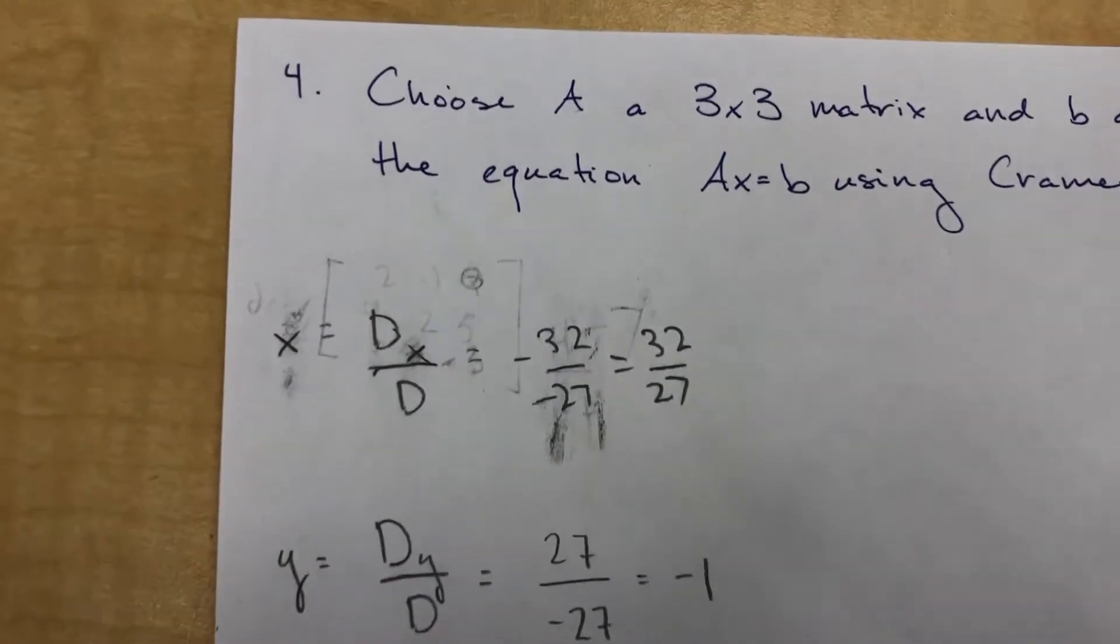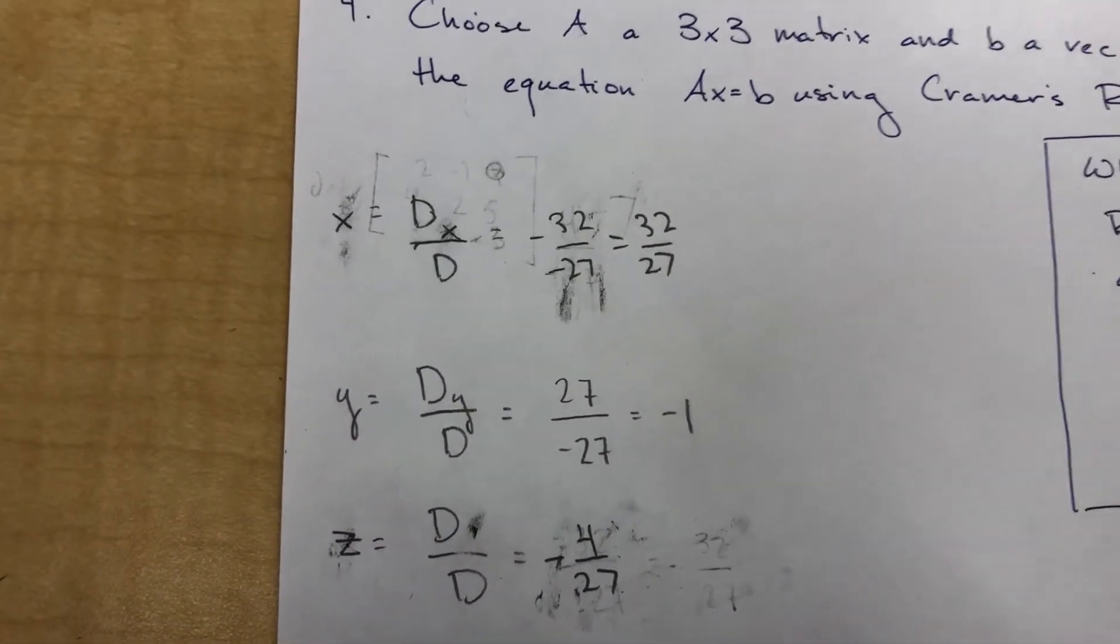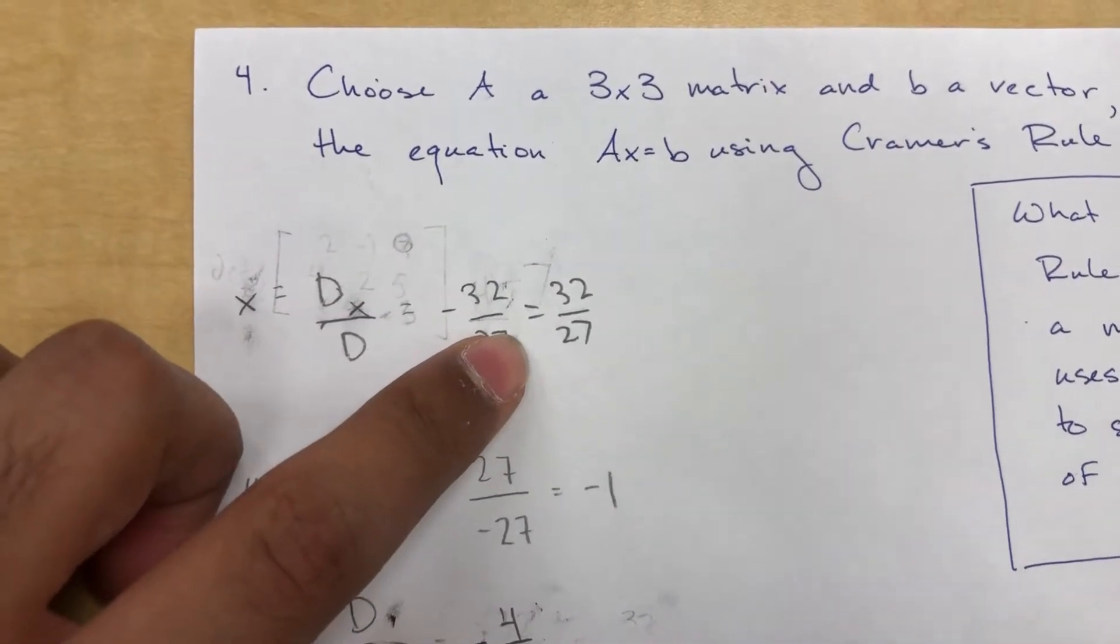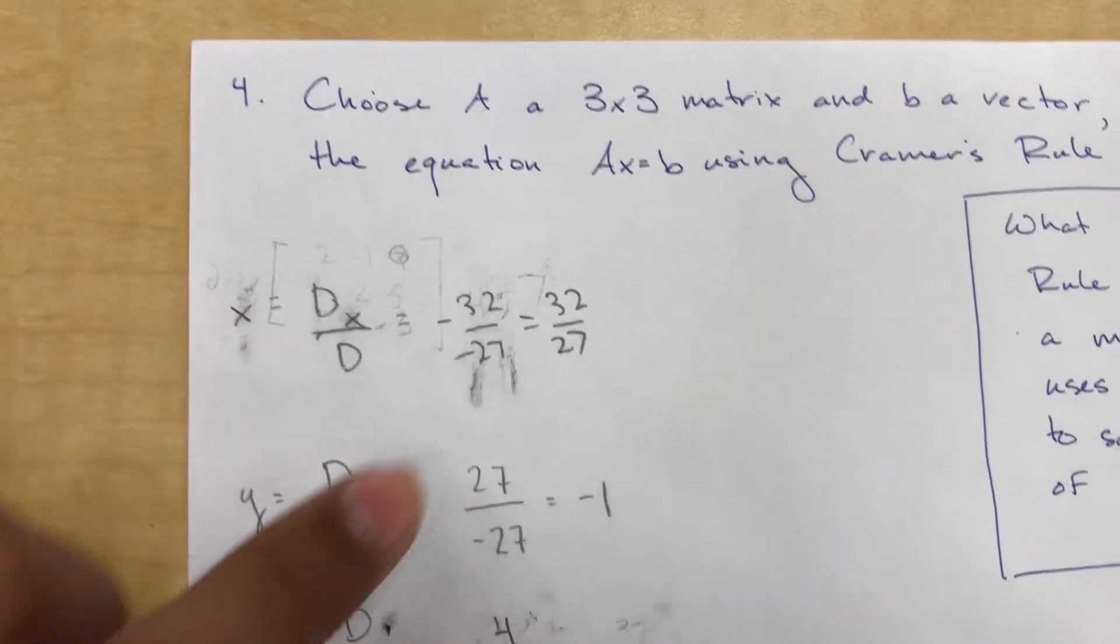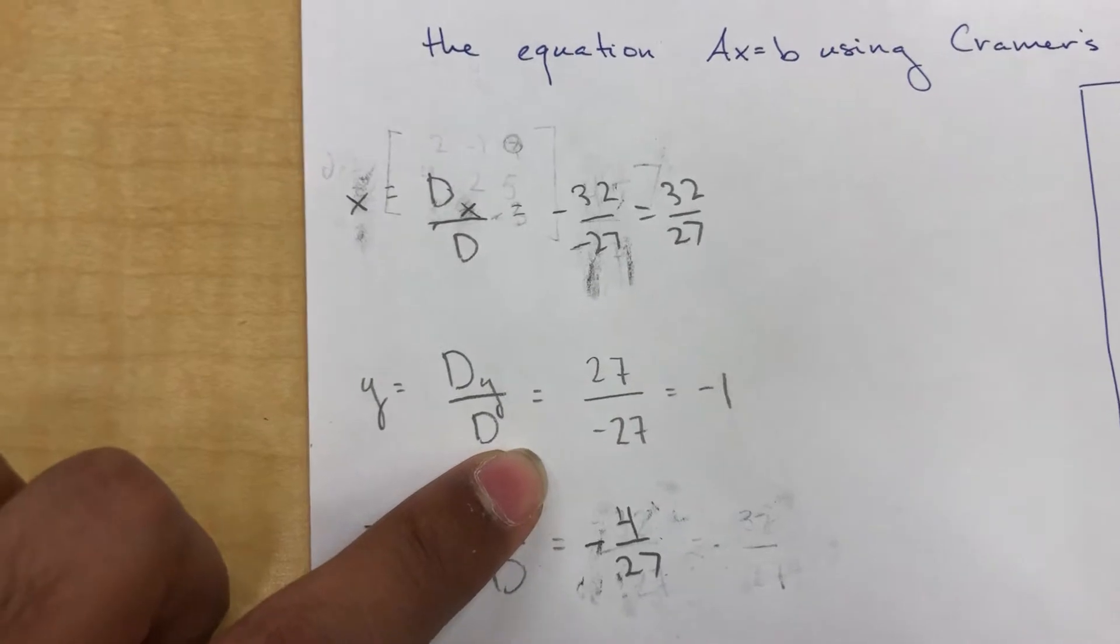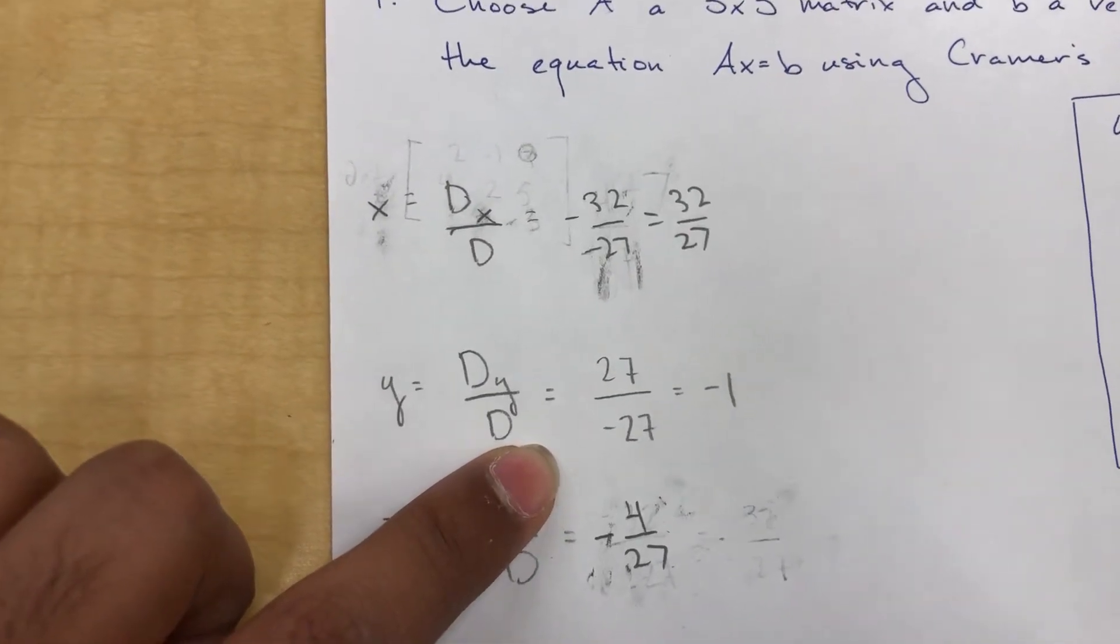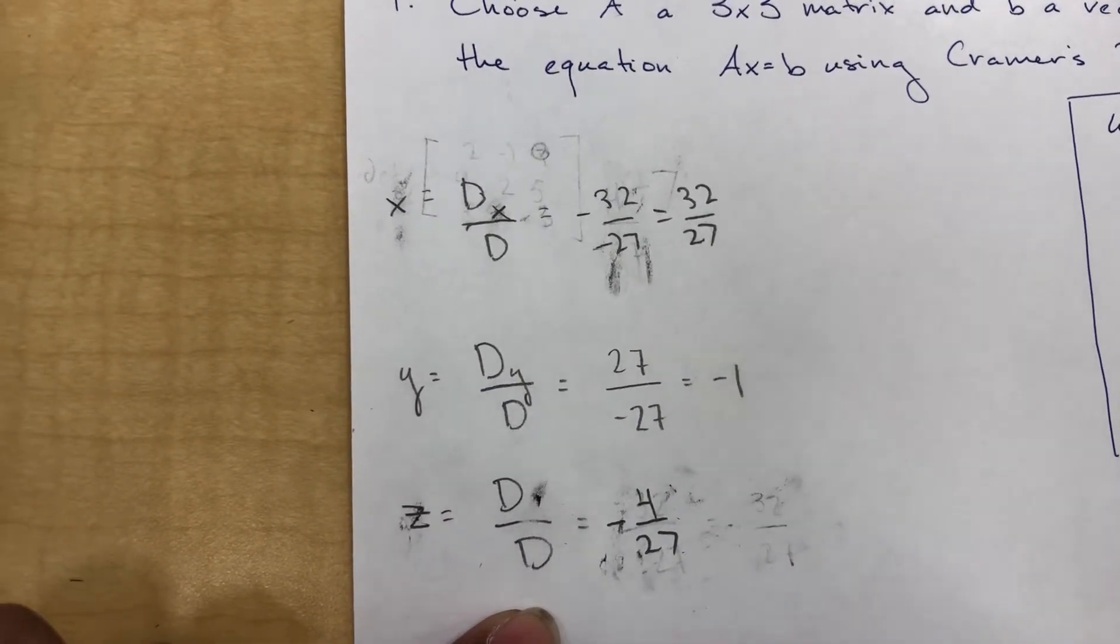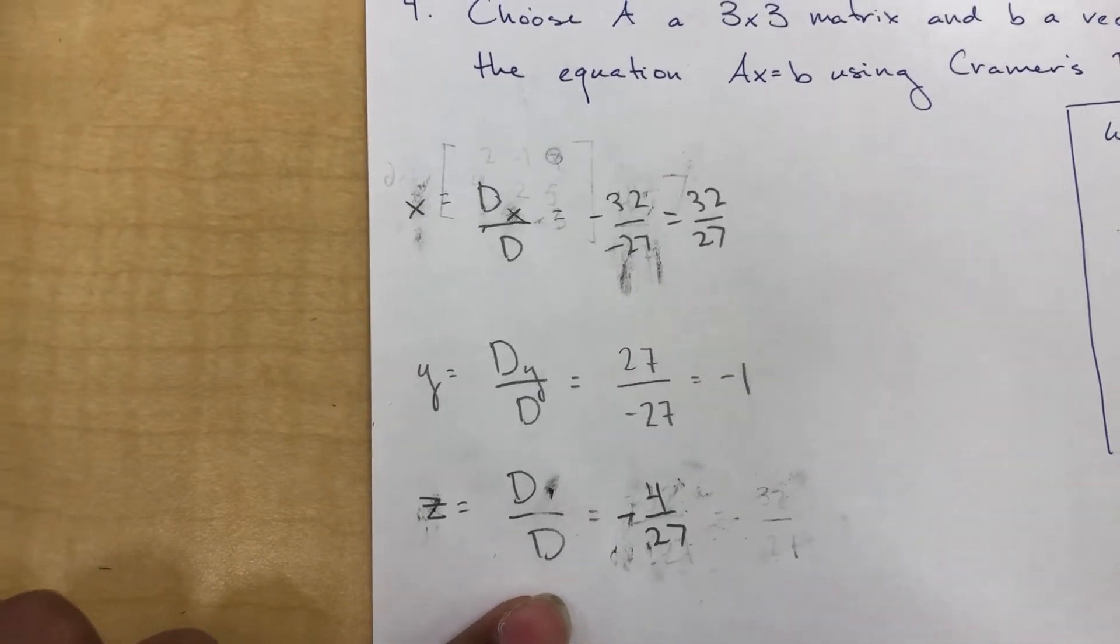Here you can see we got a determinant of negative 27 for the original matrix. For DX we got the determinant of negative 32, so the solution for X will be 32 over 27. If you repeat a similar process, our determinant for DY was 27, so that results in Y of negative 1. For DZ, we got a determinant of negative 4, so that results in a Z value of negative 4 over 27.